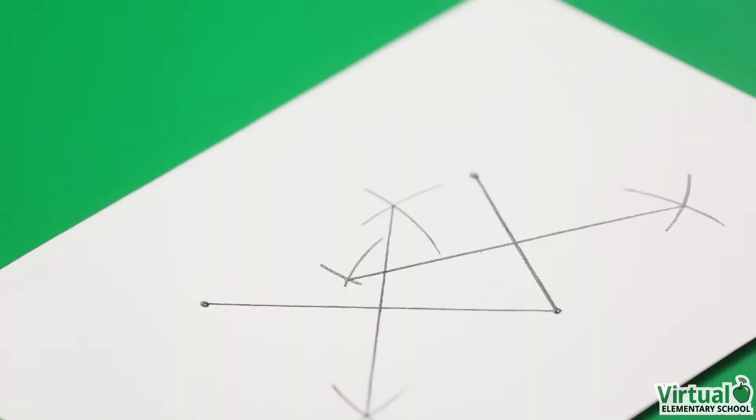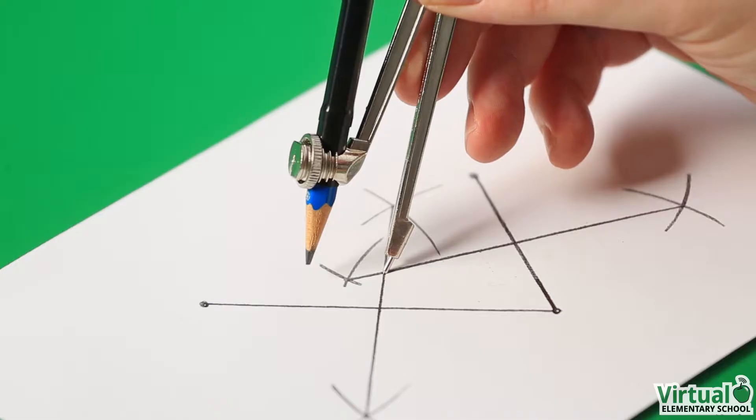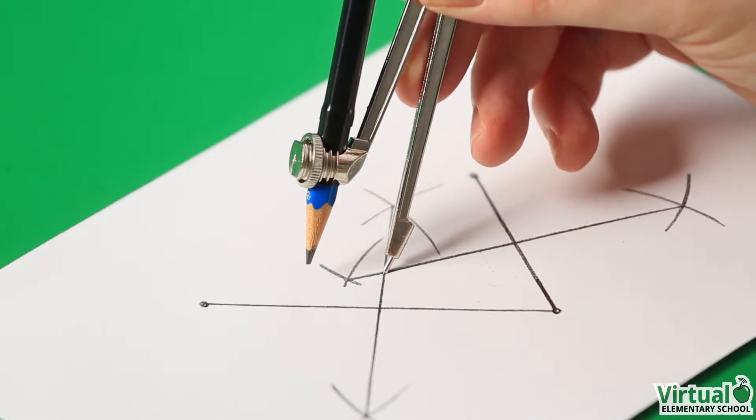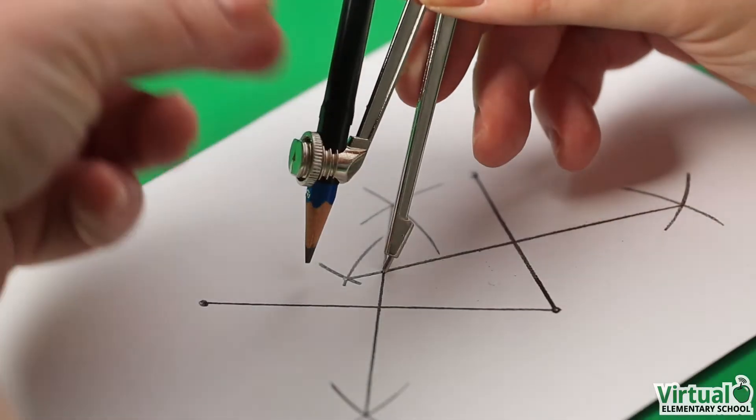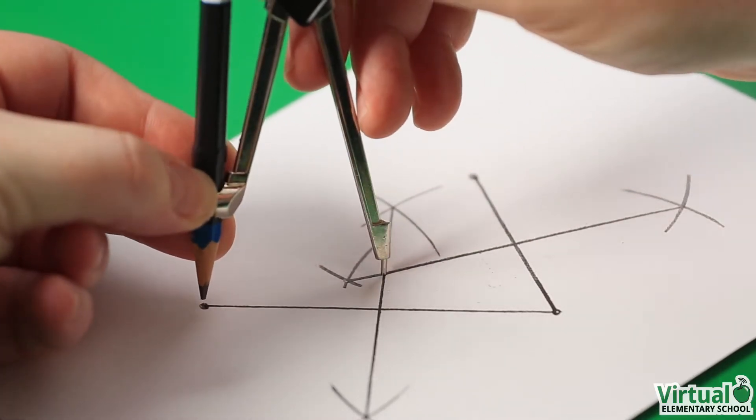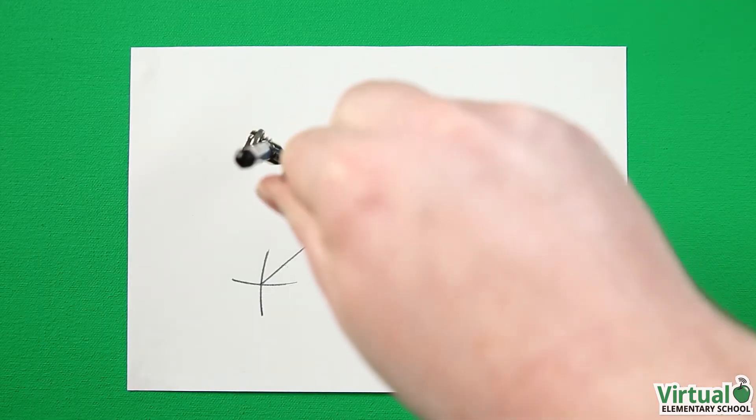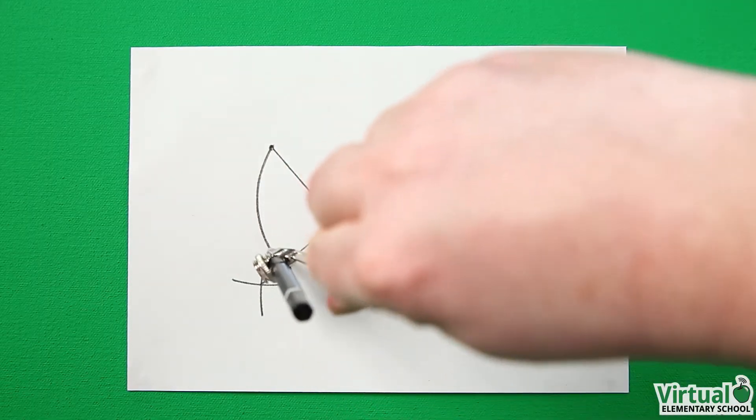We place the needle of the compass at the point where the two perpendicular bisectors intersect. We stretch the compass so that the pencil end meets one of the original points. We draw a curved line around the center to construct the circle.